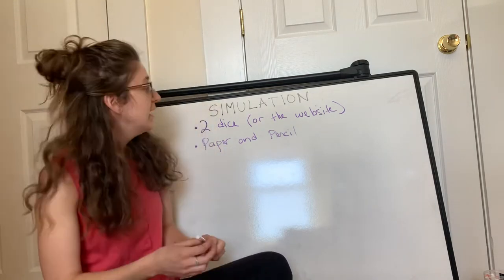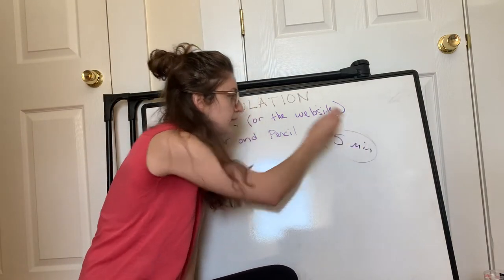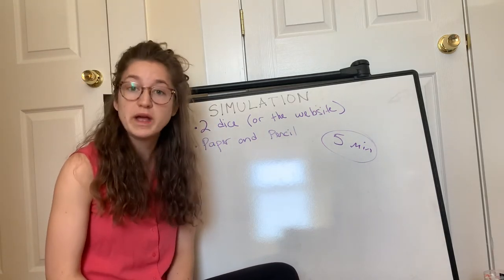What you're going to do is set a timer for five minutes and just roll your dice for five minutes and record what you get.